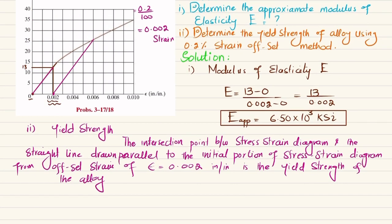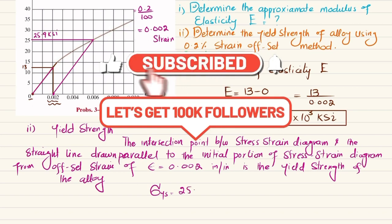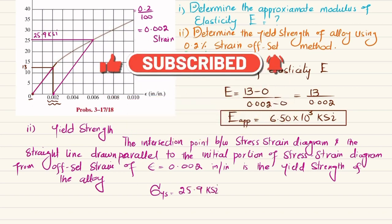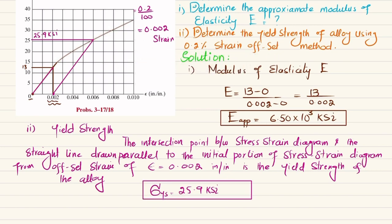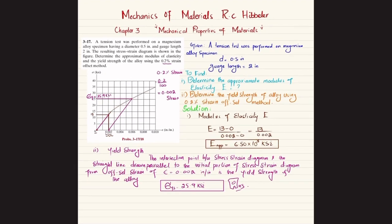Reading from the graph, the yield strength is approximately 25.9 ksi. So yield strength σ_y ≈ 25.9 ksi. That completes the solution to problem 3-17.